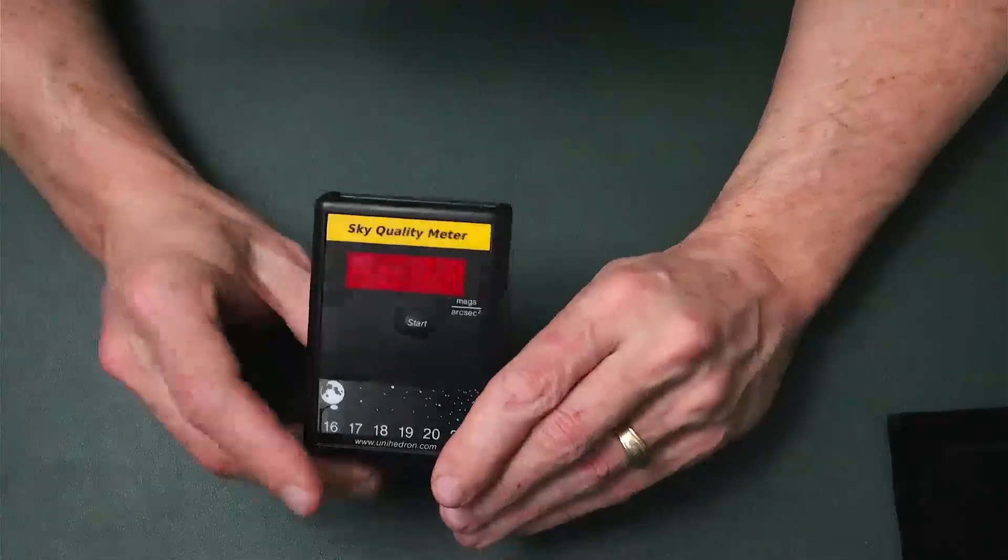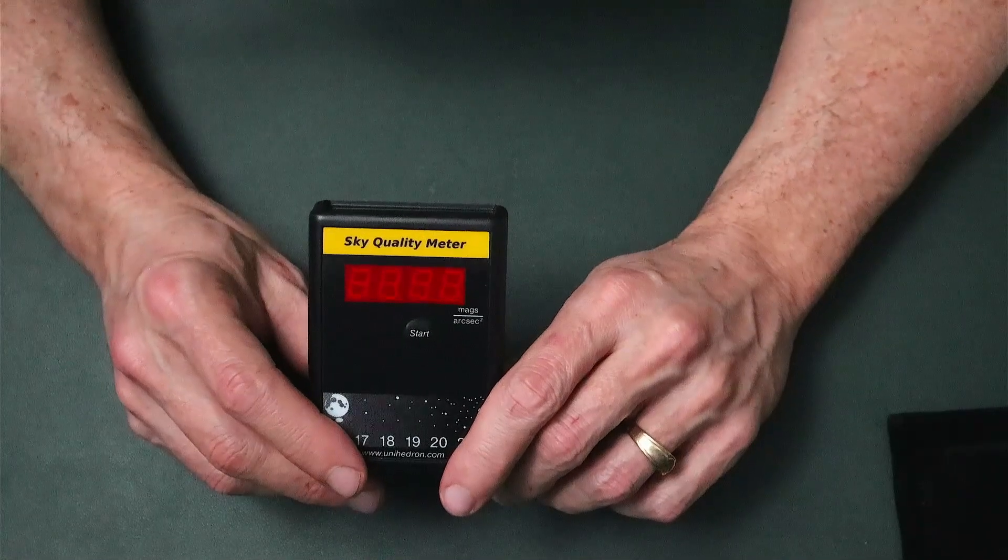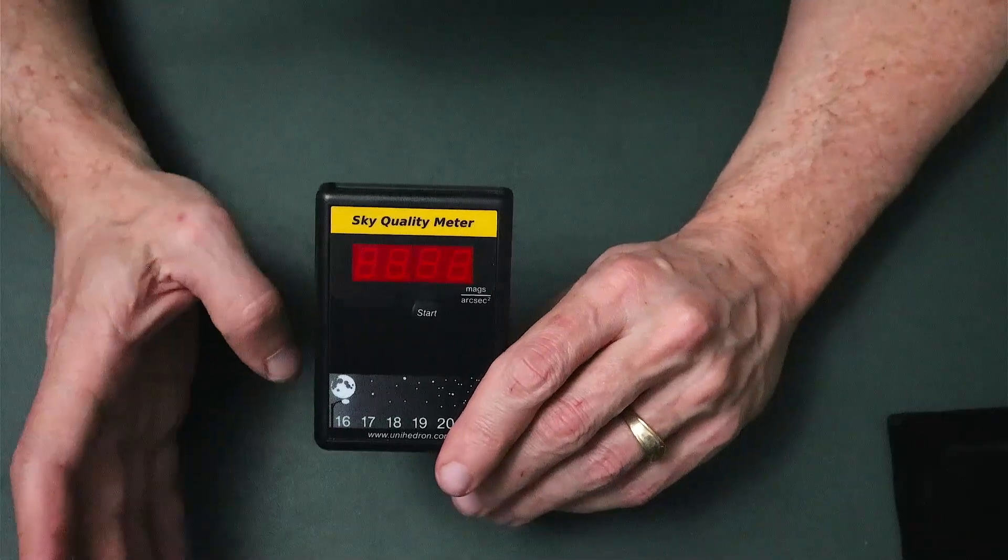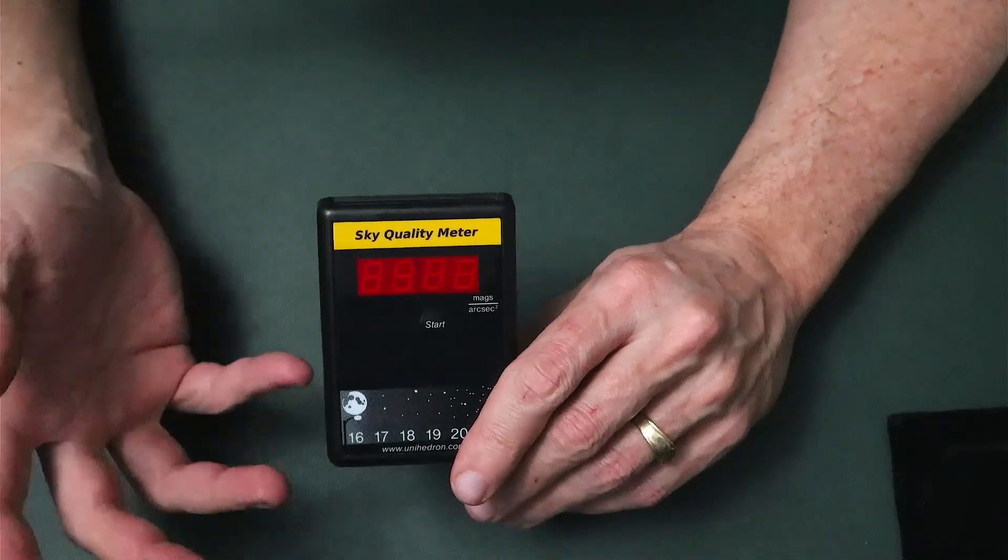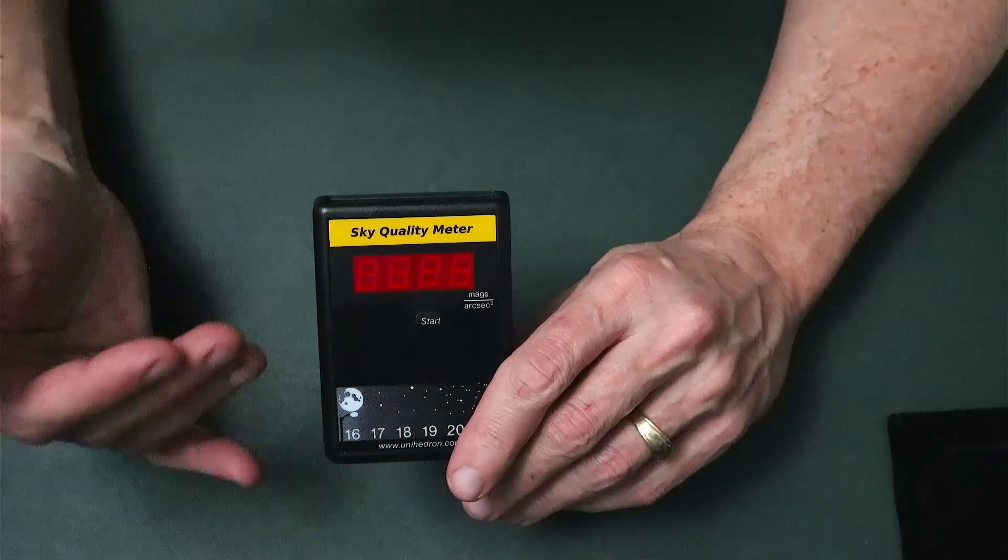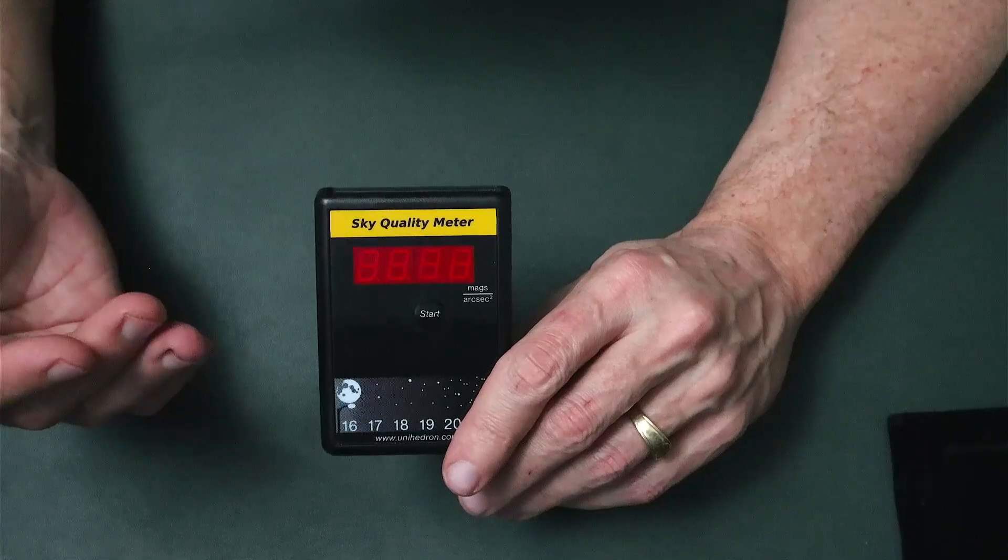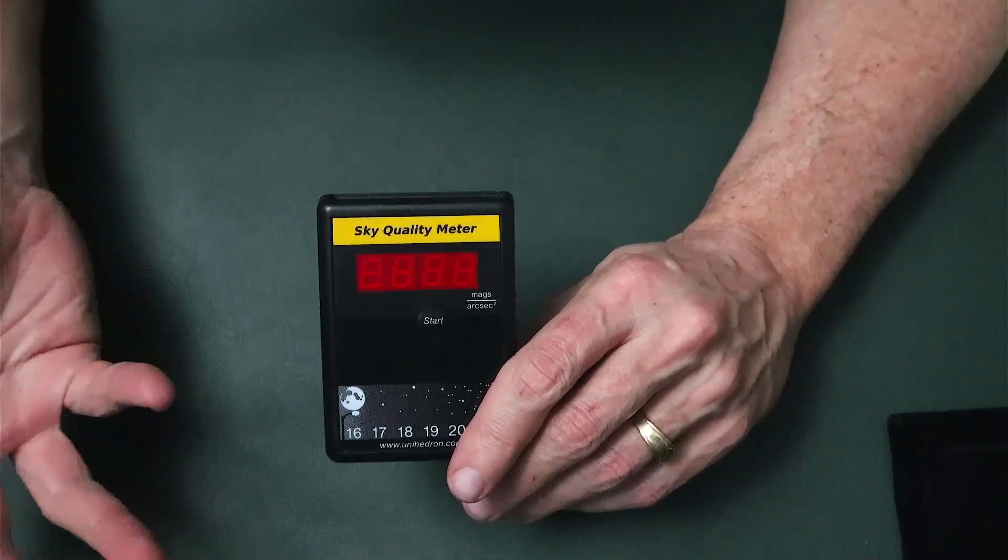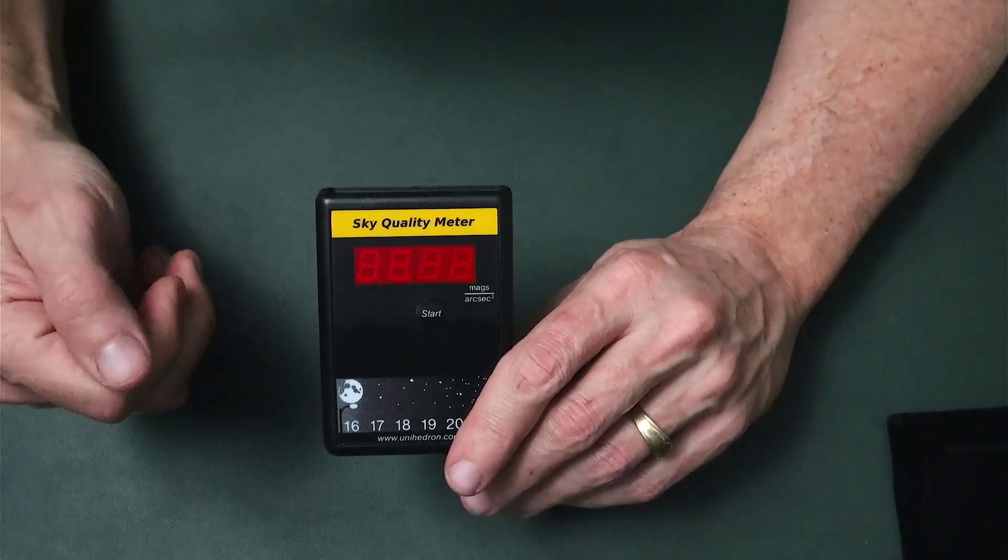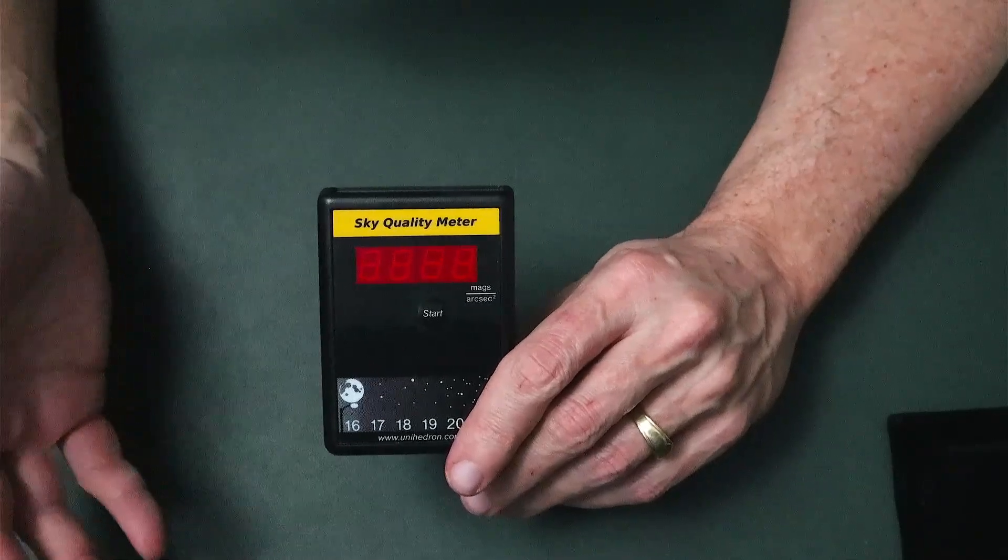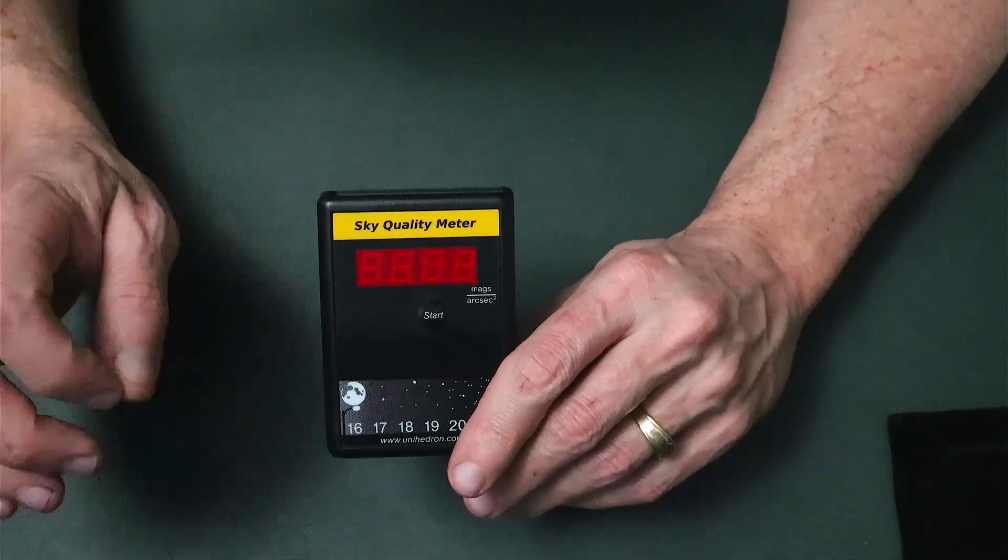They also recommend when you take a measurement, for better accuracy, to disregard your first reading and take a second one. Even better, take like four and then average them out. And that's actually how they want you to submit your readings to their website or their mobile apps. So you know, take three, four, five, six readings and average them all out, and that would be a more accurate representation of the measurement of the darkness of your sky.